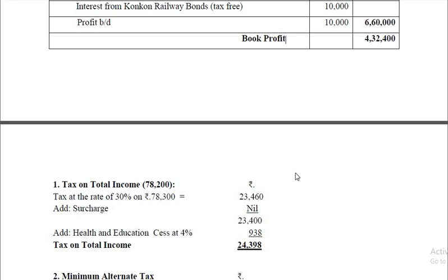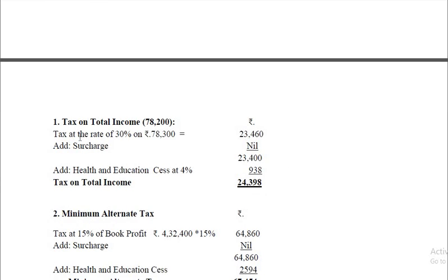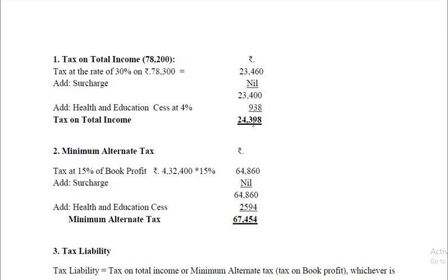Now calculate tax on total income. There are no incomes with special rates such as short-term capital gains at 15 percent, long-term capital gains at 20 percent, or casual incomes like lottery. So 30 percent is applicable on the entire total income, assuming this is a domestic company. Tax comes to 23,460 on 78,200. Surcharge is nil as total income does not exceed 1 crore. Health and education cess is 4 percent of 23,460, which is 938. Tax on total income is 24,398.